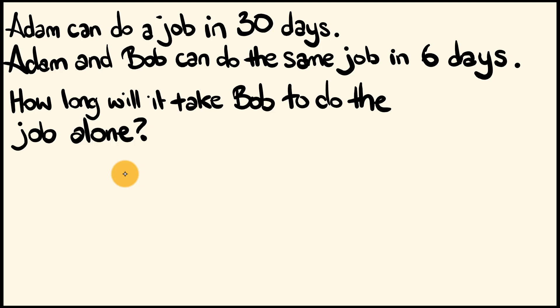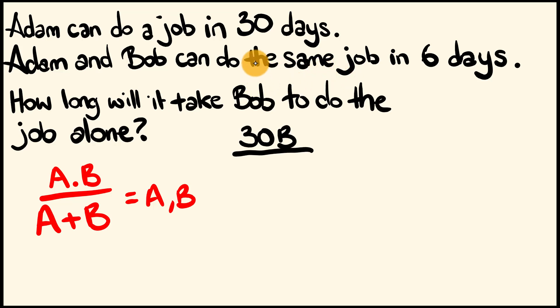So, before what we did is we got the number of days that Adam took and we multiplied it by the number of days that Bob took. And we divided this by the number of days that Adam took plus the number of days that Bob took. And this gave us Adam and Bob working together the number of days they took. So, what we're going to do is we're going to tweak this around a bit. We're going to substitute in our values and then treat this like an algebra equation. So, let's substitute in our values here. A is the number of days that Adam takes. It's 30. So, we have 30 and that's being multiplied by the number of days that Bob takes. That is going to stay as B. We don't know what that is equal to. So, 30B. And this is all going to go over A plus B. That is 30 plus B. And this is equal to the number of days it takes them working together, that is six days.